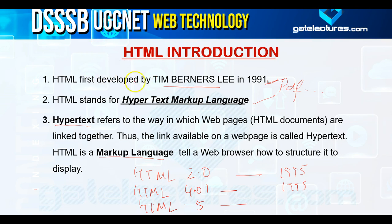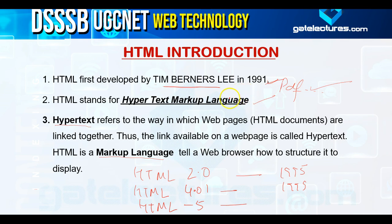HTML was first developed by Tim Berners-Lee in 1991. Initially, HTML was proposed in order to design scientific documents, to make communication easy between scientists. Later on it was adopted by various electronic documents like PDF, and nowadays it is used in the World Wide Web to describe any web page. Every web page is written in HTML code.